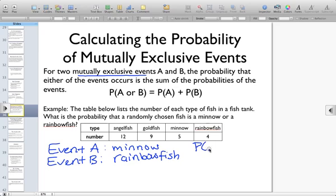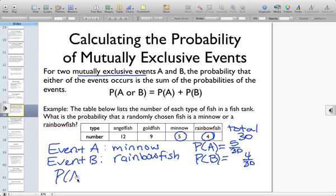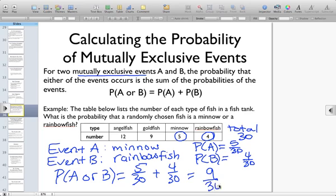First I'm going to figure out the probabilities of each event separately, and then I'm going to add them. Count up how many fish you have in all. The total fish we have is 30 fish. So the probability of choosing a minnow would be 5 out of 30, and the probability of choosing a rainbow fish is 4 out of 30. That means the probability of choosing either a minnow or a rainbow fish would be the probability of the minnow plus the probability of the rainbow fish.